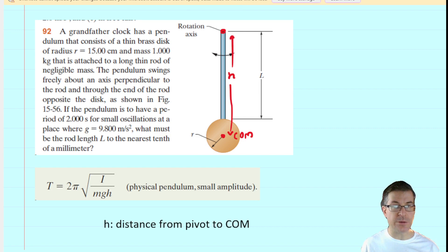We can see from the diagram that the distance from the rotation axis down to the top of that brass disc is l, and then the radius of the brass disc itself is lowercase r. So hopefully you can see in the picture that h is simply going to equal that distance l plus r, and that's what we're going to end up plugging in for h into the equation.